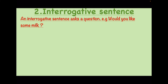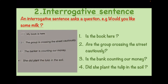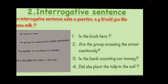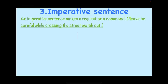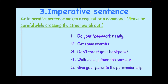An interrogative sentence asks a question. Example: Would you like some milk? Is the book here? — My book is here. Are the group crossing the street cautiously? — The group is crossing the street cautiously. Is the banker counting our money? — The banker is counting our money. Did she plant the tulip in the soil? — She didn't plant the tulip in the soil.